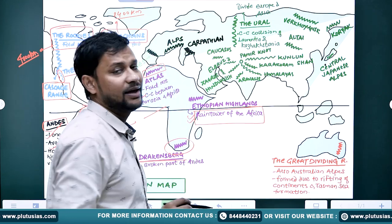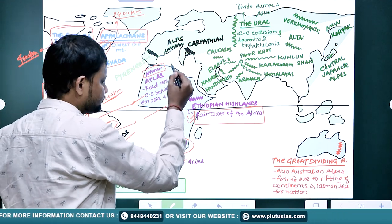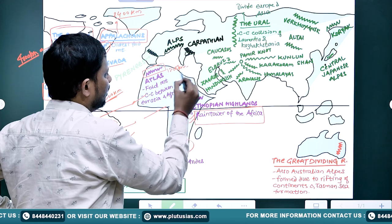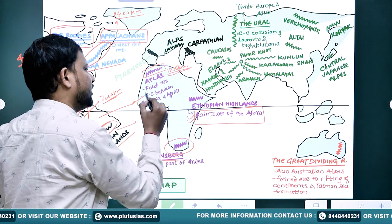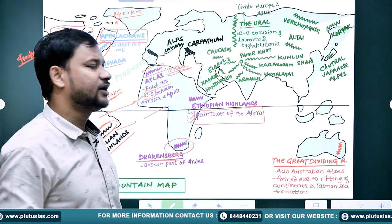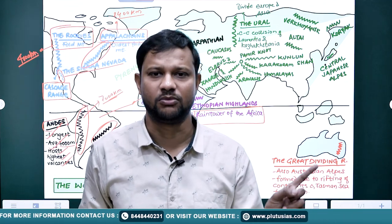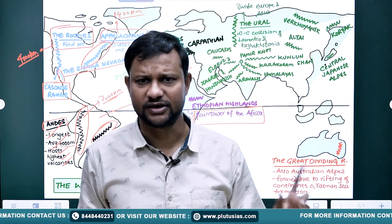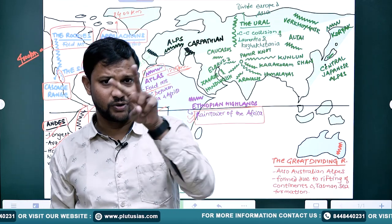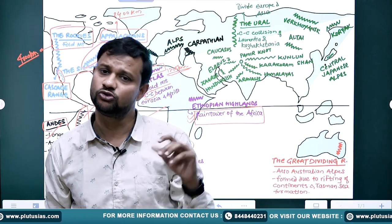On the northwestern margin, the Atlas mountain range is there — almost 1,200 kilometers in length — a fold chain mountain, result of continental-continental interaction between the Eurasian and African plates, spread across Morocco and Algeria. So in Africa: Atlas in the northwest, Ethiopian Highlands in the central region, and Drakensberg in the south — these are the major mountain ranges.